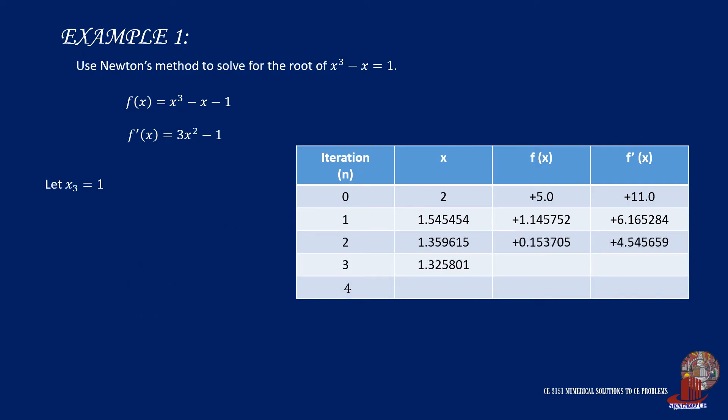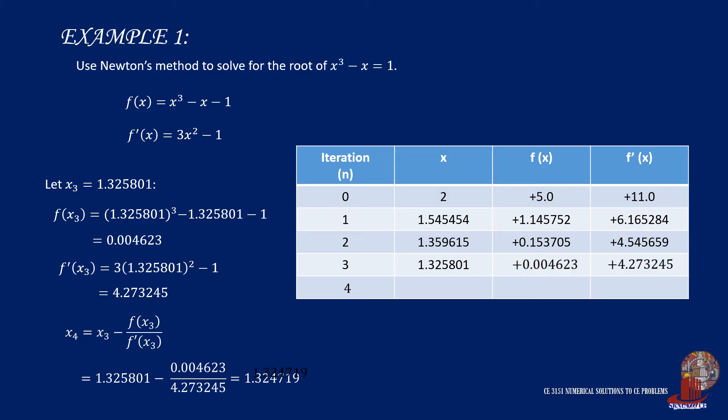We continue with the third iteration using x sub 3 as 1.325801. The function of x becomes 0.004623, and f' of x sub 3 is taken as positive 4.273245. These values will also be used in the formula to show 1.324719.